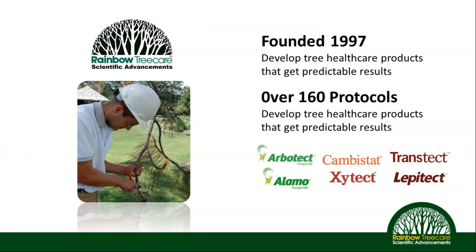A little background on Rainbow Companies: Rainbow Tree Care Scientific Advancements was founded in 1997. Our mission is to advance the science and professionalism of tree care by developing predictable tree healthcare products, equipment, and protocols. We have over 160 protocols that we train arborists on throughout the United States, covering a variety of insect and disease management tools, with people located throughout the U.S. to support arborists in the field.